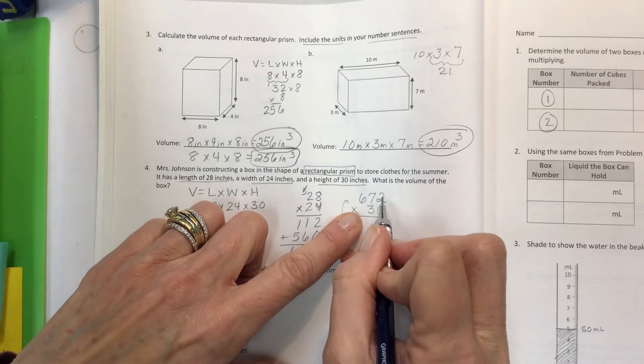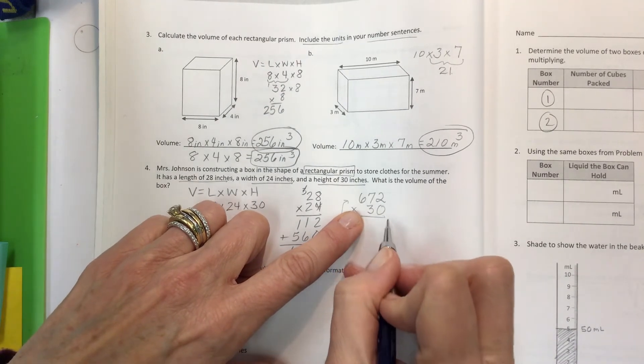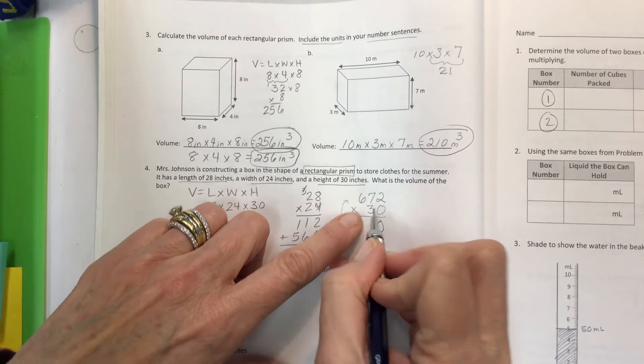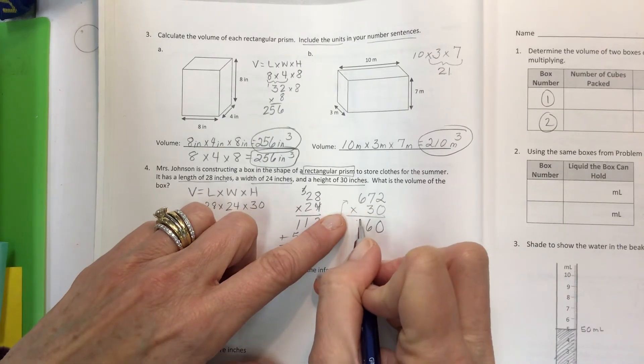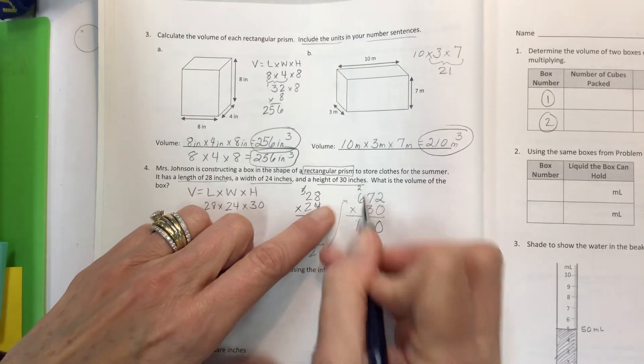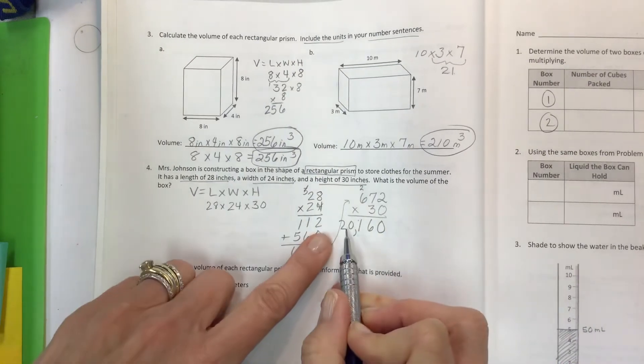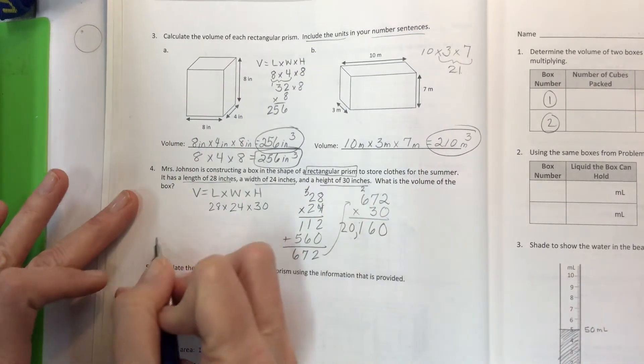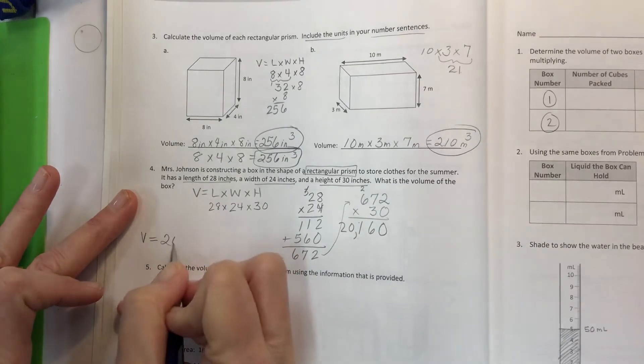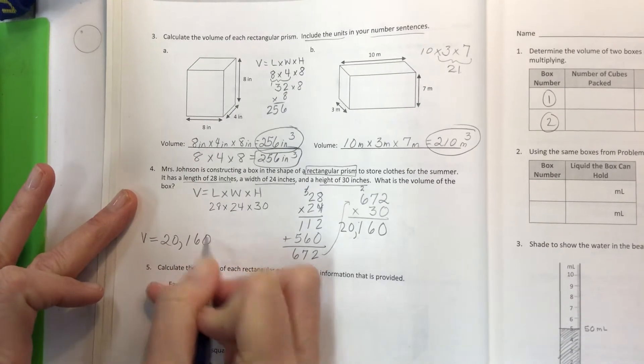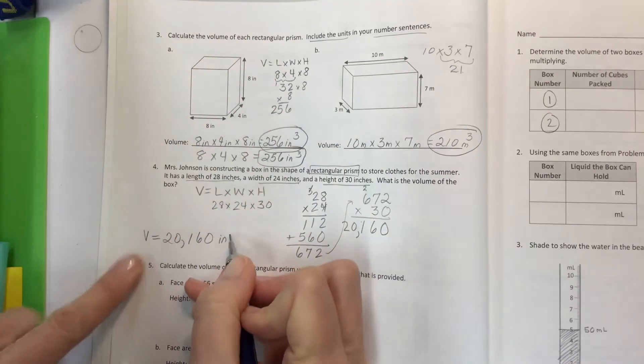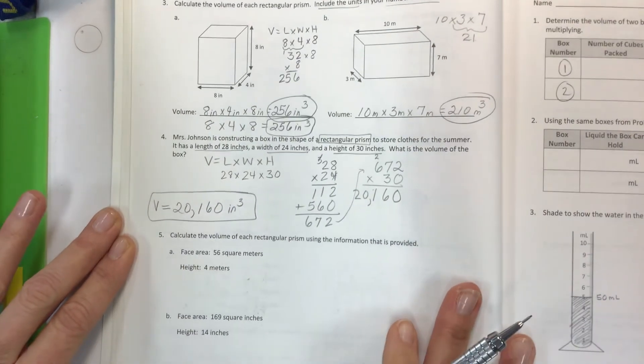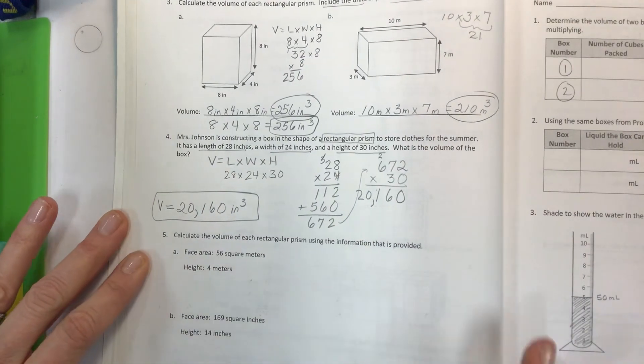0 times everything is 0. Move over. 3 times 2 is 6. 7 times 3 is 21. Carry the 2. 18, 19, 20. And so in a very strange looking way, I've got my volume 20,160. What's your unit? Inches. What's your label? Cubed. Hopefully you labeled it correctly and calculated correctly.